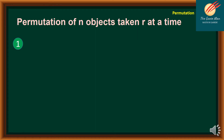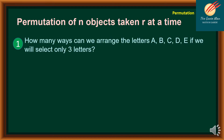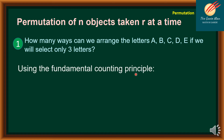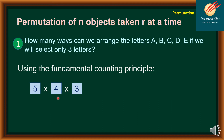A part of linear permutation is the permutation of n objects taken r at a time. Consider this first problem: how many ways can we arrange the letters A, B, C, D, and E if we will select three letters? Applying the fundamental counting principle, we have five letters taken three at a time. The first position has five options, the second has four, and the third has three. The product is 60, so there are 60 ways.